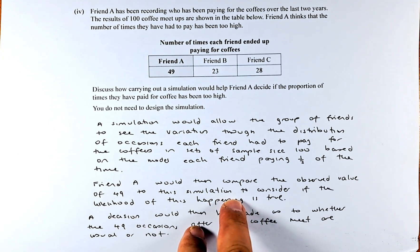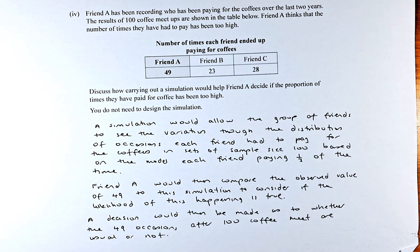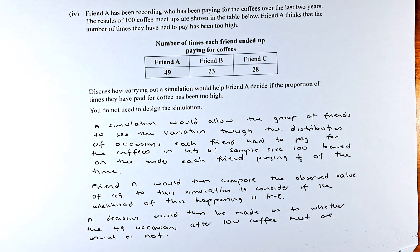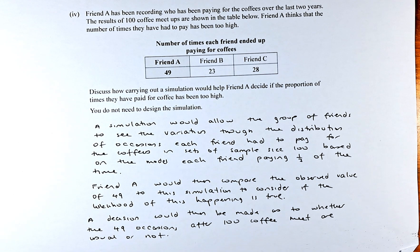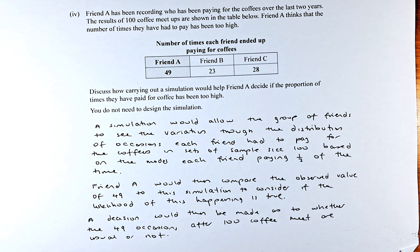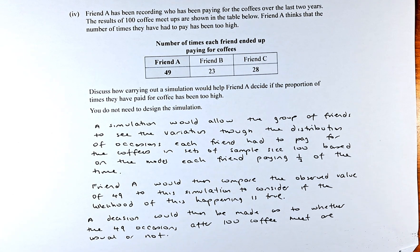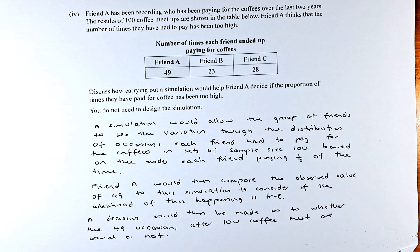This is the process of simulation. You have to create it using a random number generator, but you do not need to show it, just describe what you are going to do. If the number is close to 49, then it is correct. If not, then we can say the number of times he paid is a bit too high.